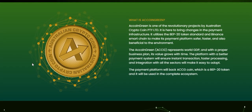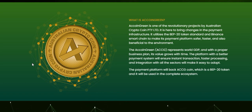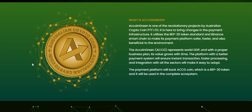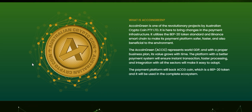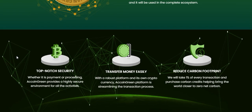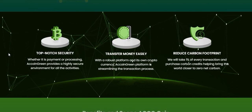So what is AC Coin Green? AC Coin Green is one of the revolutionary projects by Australian Crypto Coin Pty Ltd. It is here to bring sense to the payment infrastructure. It utilizes the BEP20 token standard and Binance Smart Chain to make its payment platform safer, faster, and also beneficial to the environment.